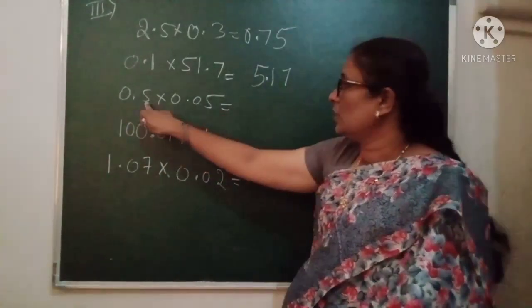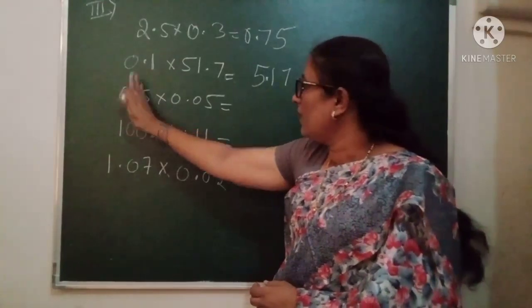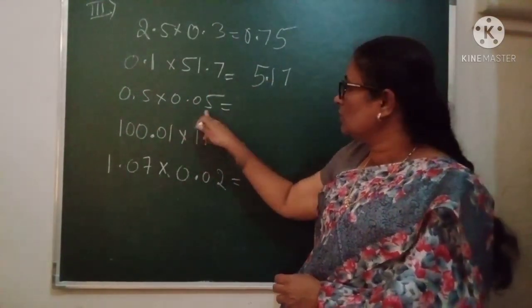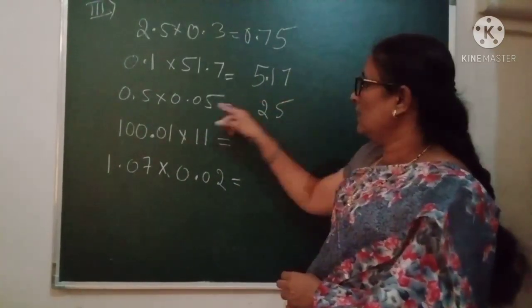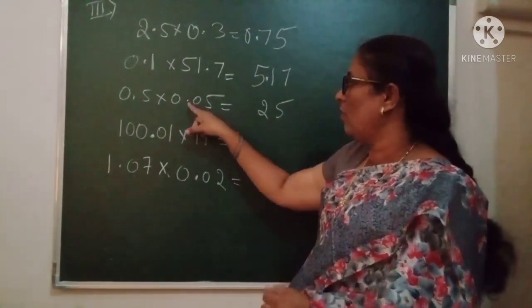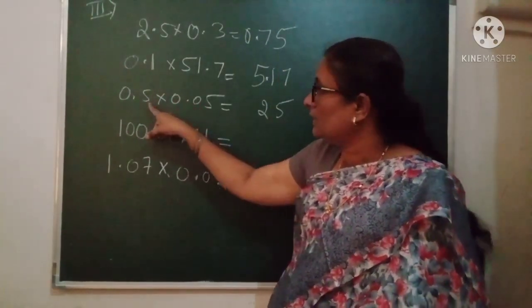Now 0.5 × 0.05 is more easy. For 0.5, only 5 we'll consider by multiplying. This is also 5. 5 × 5 is 25, very simple. Then the digits we have after decimal point: here 1 digit, here also 1 digit. That means 1, 2, and 3 digits we have.